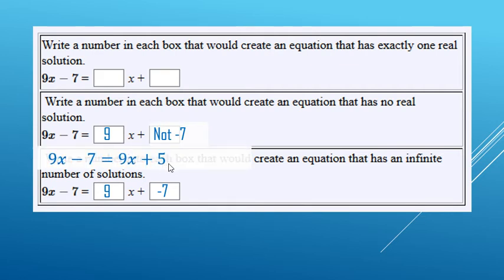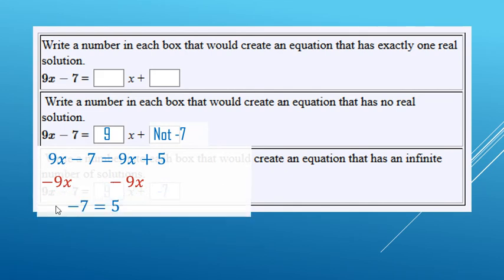Let's say it's a 5. Now, if I try and solve this here, I'm going to subtract 9x from both sides, and I end up with no x's on either side, and I just have negative 7 equals 5, which is false. And that's why there is no solutions there.